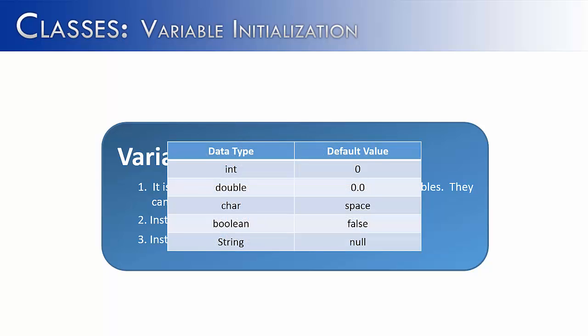And I've given a little table here to indicate the data type and the default value. Any integer value, byte, short, int, and long, would get zero. Any real data type, double or float, would get 0.0. The character data type gets a space. The Boolean data type is assigned to false. And a string, or any object for that matter, is assigned to null.